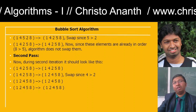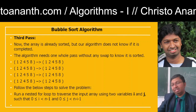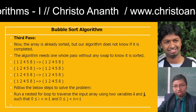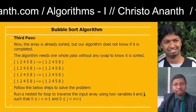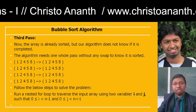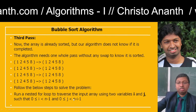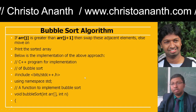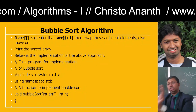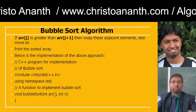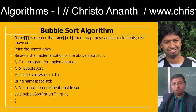This is actually the worst case — even if we find the algorithm has produced a sorted order, the computer will not understand, so it will process again and again. In the third pass it is already sorted but the computer does not know; it needs one whole pass to make sure it is sorted. You are going to have a nested for loop to traverse the input using two variables i and j, where i goes from 0 to n−1 and j from 0 to n−i−1. The condition is: if array[j] is greater than array[j+1], then swap; then print the sorted array.